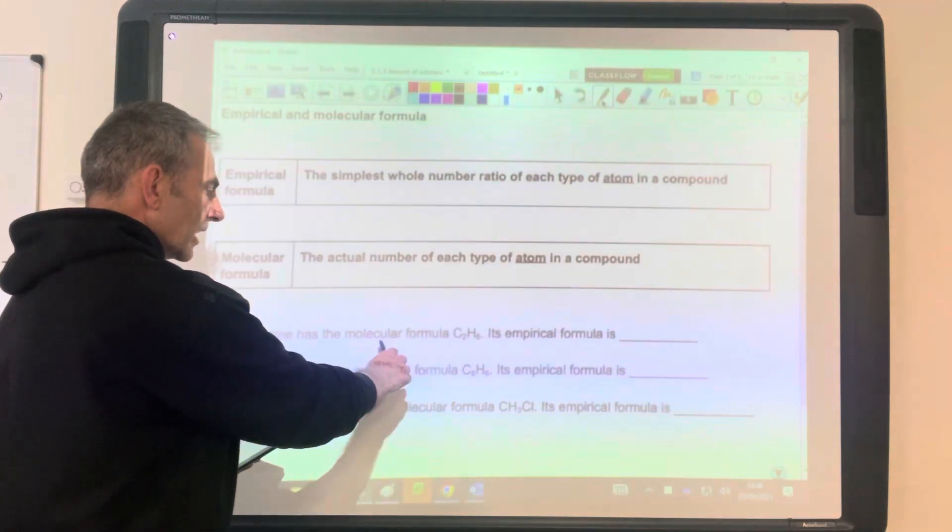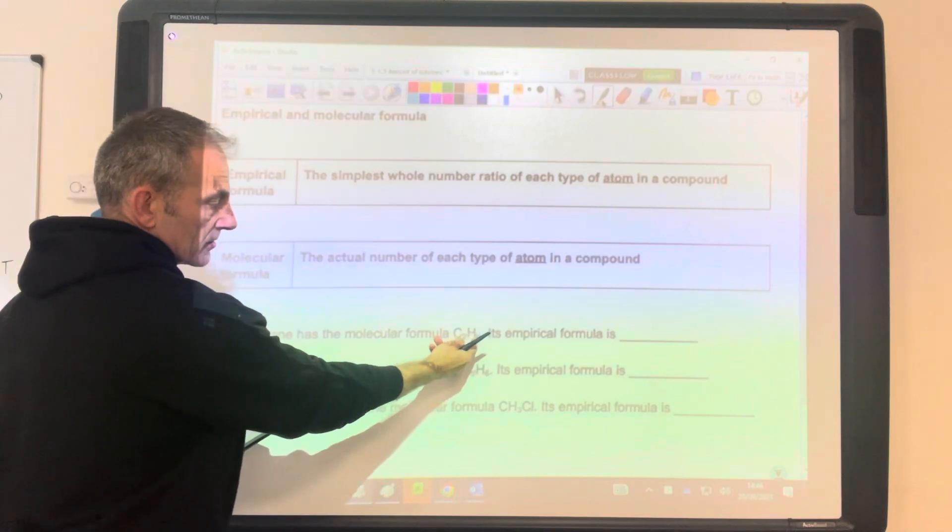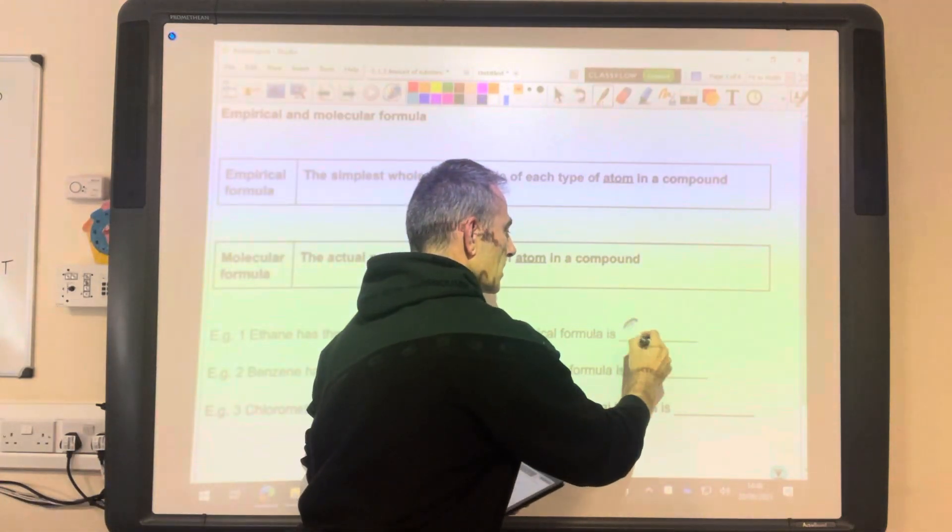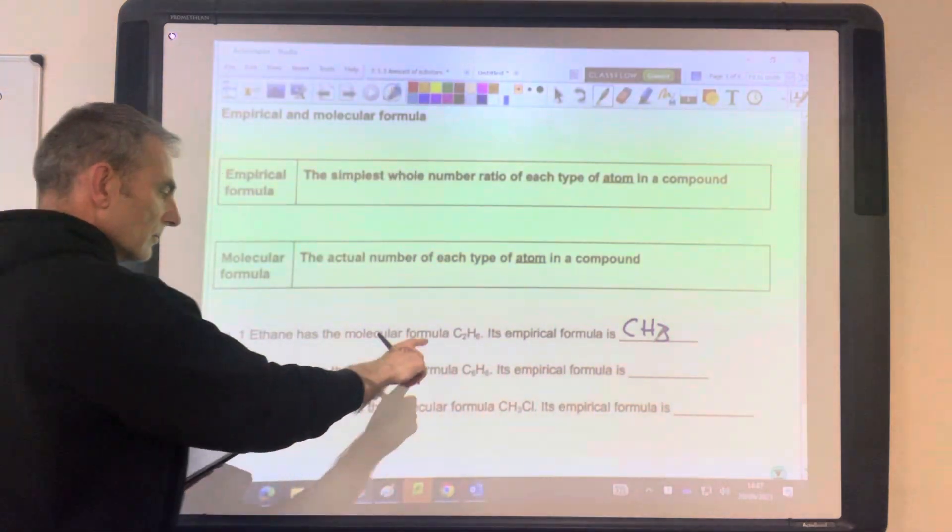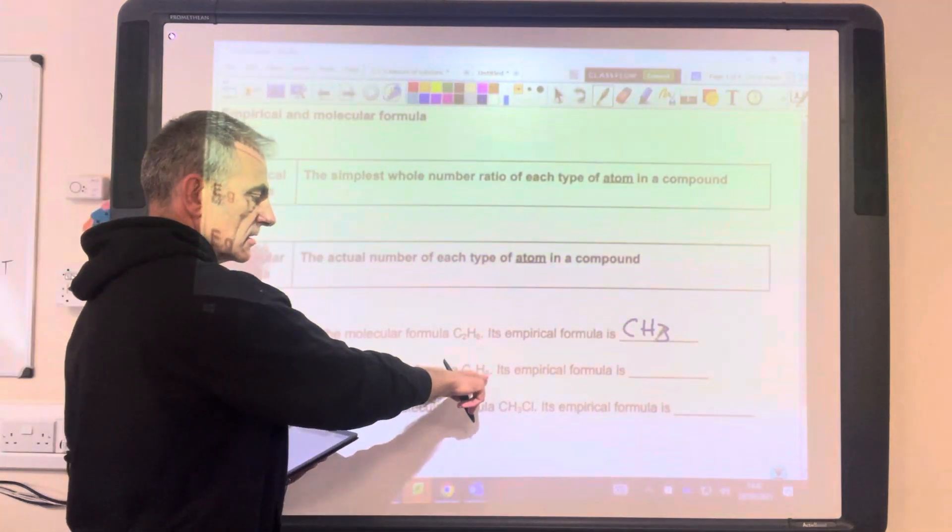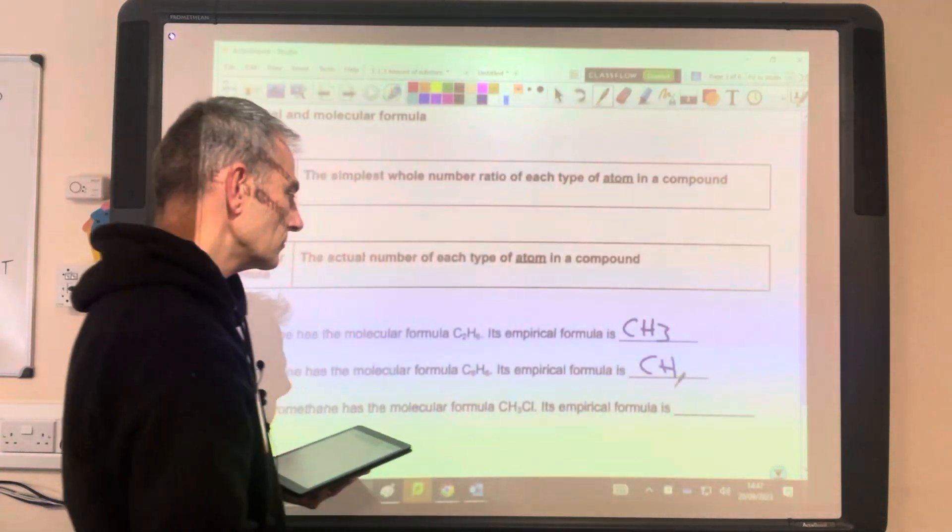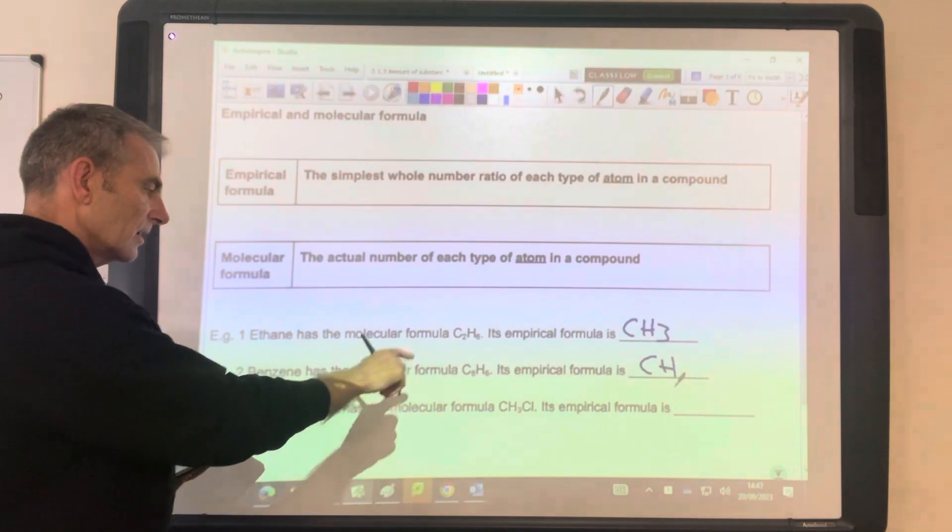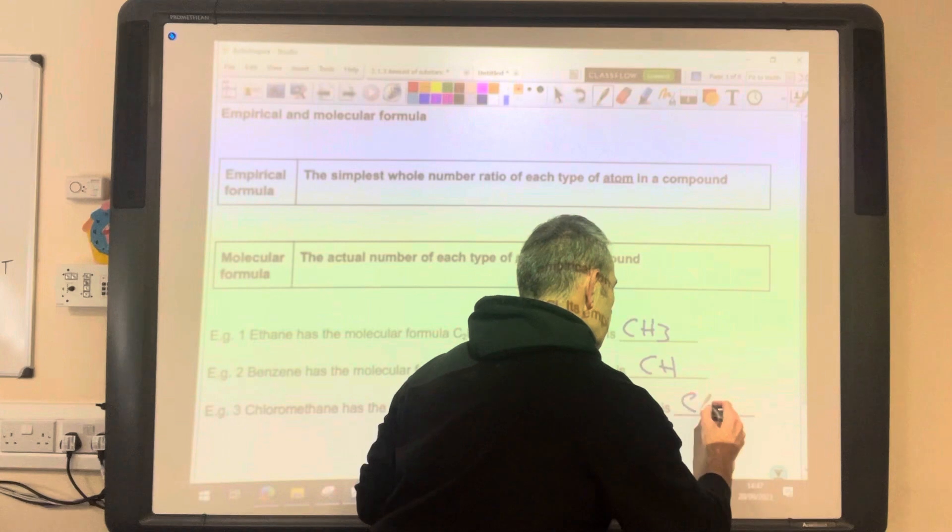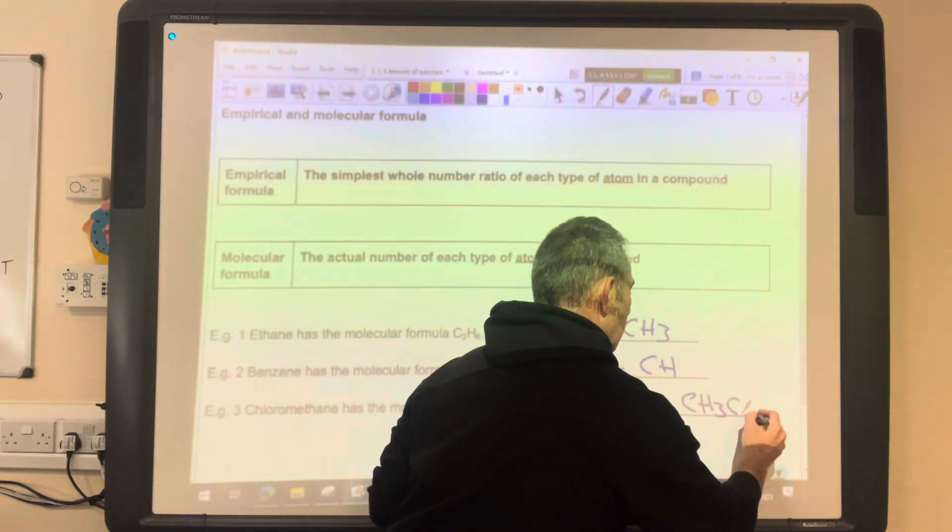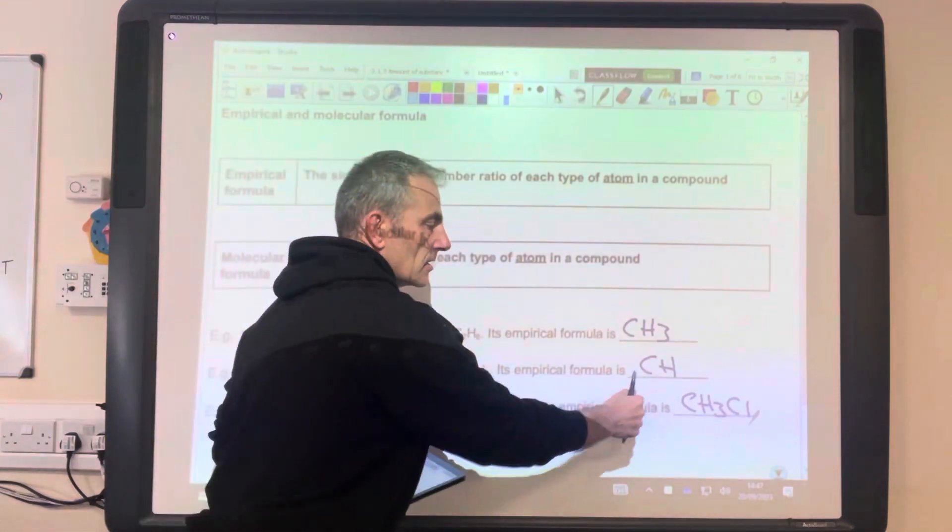Ethane has the molecular formula C2H6. The empirical formula, simplest whole number ratio of that, is CH3. Benzene, molecular formula C6H6, empirical would be CH. And chloromethane has the molecular formula CH3Cl. Well, that can't be simplified, so it stays at CH3Cl. So sometimes the empirical formula and molecular formula are different. Sometimes they're the same.